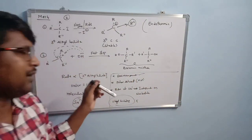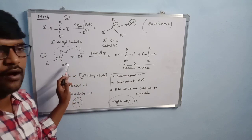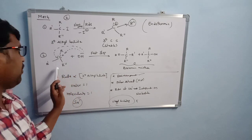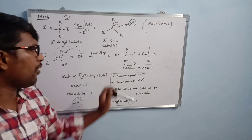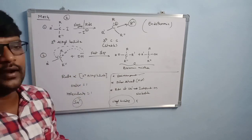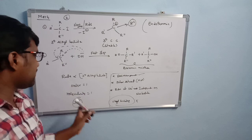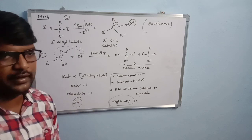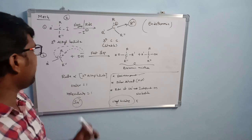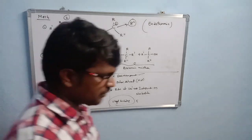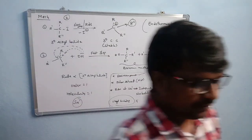In summary, in an SN1 reaction, if an optically active halide is taken, the product obtained is a racemic mixture. The molecularity of the reaction is 1.